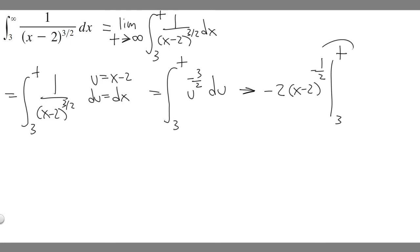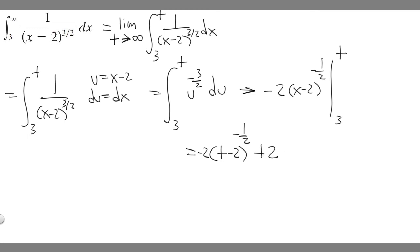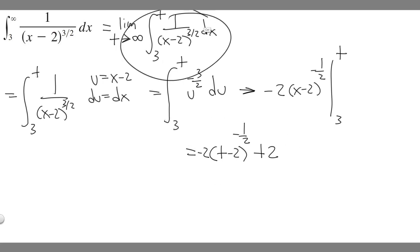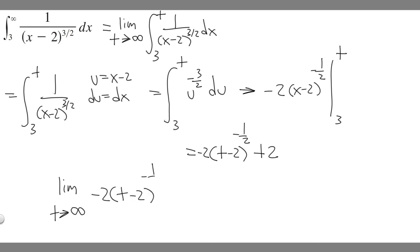Now we just plug in our values. Plugging in t gives minus 2 times t minus 2 to the minus 1/2. Then plugging in 3, we get minus minus 2 times 3 minus 2 to the minus 1/2, which is plus 2 times 1 to the minus 1/2. Since 1 to anything is 1, that becomes 2 times 1, which is just 2. So our expression is minus 2 times t minus 2 to the minus 1/2, plus 2.